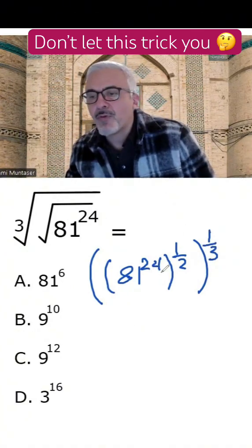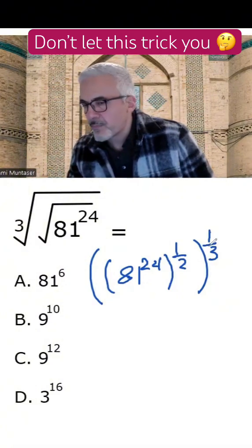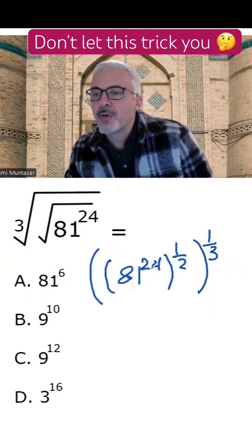We have 81 to the power of 24, all to the power of 1 half, all to the power of 1 third. When we have exponents like that outside of the brackets, all these exponents are going to get multiplied.